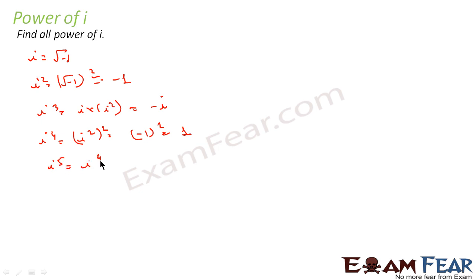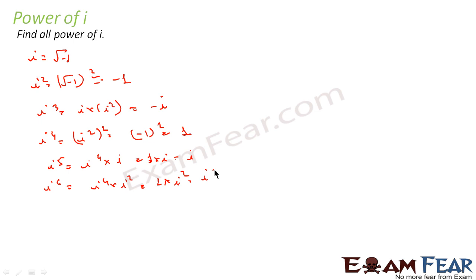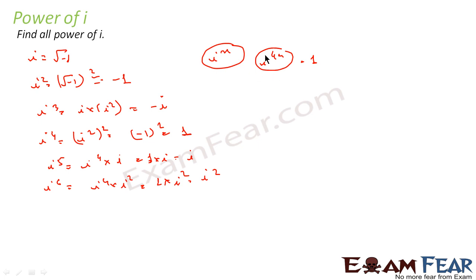Similarly, when you say i⁵, i⁵ will be i⁴ into i. And i⁴ is always 1, so we get 1 into i, which becomes i. When you say i⁶, i⁶ will be i⁴ into i squared, which becomes 1 into i squared. So what we do for i to the power n: we find the factor up to 4. If the exponent is i to the power 4n, this will always become 1, because i to the power 4 is 1.